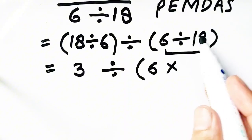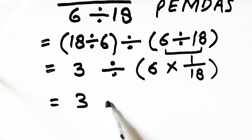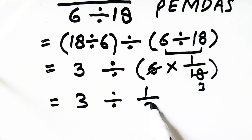And flip means we put its reciprocal, it will be 1 over 18. Now, 6 is cancelled with 18, so it will be 1 over 3.